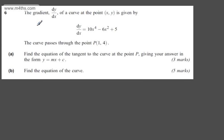This is question number 6. We're told the gradient dy/dx of the curve at the point (x, y) is given by dy/dx = 10x^4 - 6x^2 + 5. We're told the curve passes through the point (1, 4).